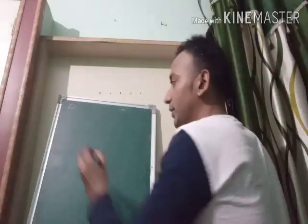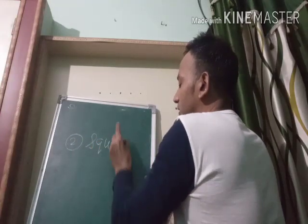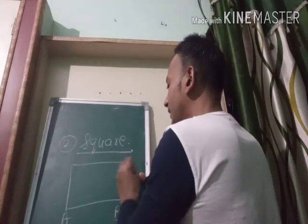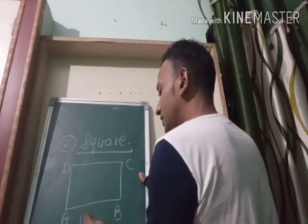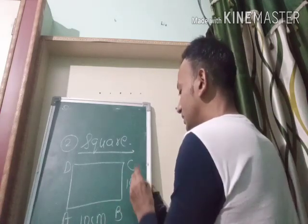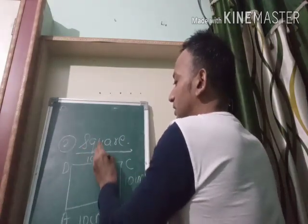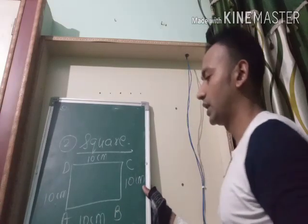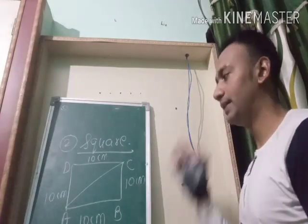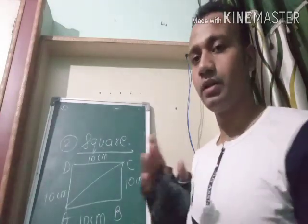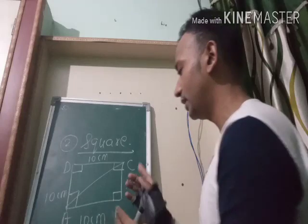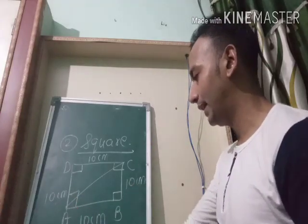The second formula we will be using is related to a square. Suppose we are having a square of side 10 cm, so each side will be equal to 10 cm. Now suppose I want to find the diagonal length AC. We will be using Pythagoras theorem, since in a square every angle is equal to 90 degrees. I will be using Pythagoras theorem in triangle ABC.